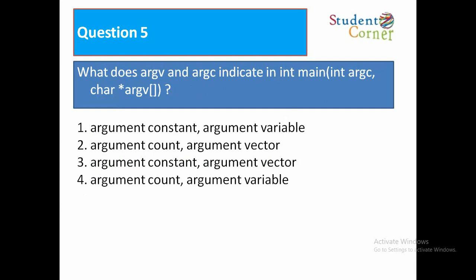Question number 5. What does argc and argv indicate in int main int argc comma character star argv? Option 1 argument constant argument variable, option 2 argument count and argument vector, option 3 argument constant and argument vector, option 4 argument count and argument variable. The answer is argument count and argument vector.